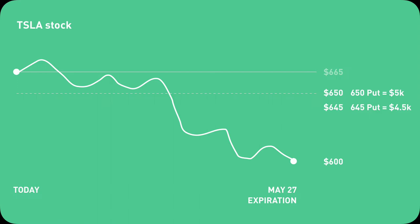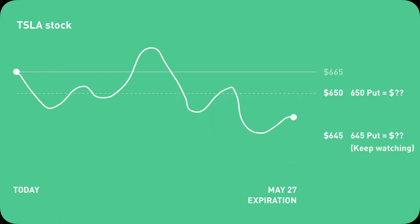If Tesla's stock price ends up at, say, $600 — way below your lowest strike put of $645 — you will not get your $500 collateral back, meaning you will lose all $500. But since you gained $185 credits cash in the beginning, your net loss is $185 minus $500, which equals $315. If Tesla's share price ends up between 650 and 645, you can net positive or negative depending on where exactly. And that is the 3-minute version of what a put credit spread is.